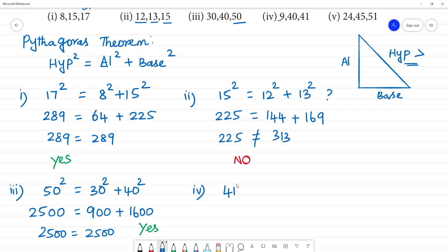41 square will be equal to 9 square plus 40 square. 41 square: 41 multiplied by 41 is 1681. 9 square is 81 plus 40 square is 1600. Add them: 1681 equal to 1681, so yes, it is a Pythagorean triplet.